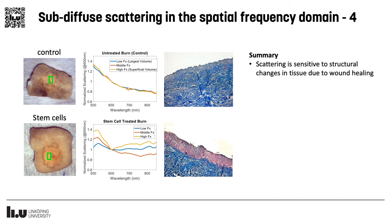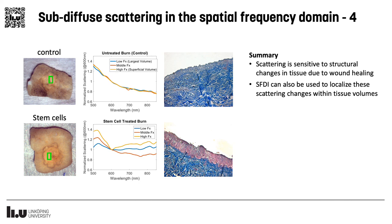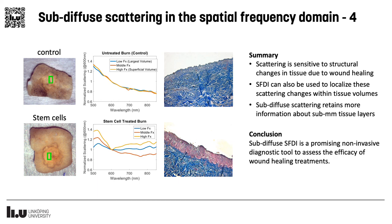To sum up, scattering is a great and little-explored source of contrast for structural changes in tissue due to wound healing. We can measure scattering using SFDI, and this measurement can also be depth sensitive by using different spatial frequencies. We also investigate methods to detect sub-diffuse scattered photons, because they can provide additional information about microscopical structures in tissue. In conclusion, sub-diffuse SFDI is a promising non-invasive technique and could be easily employed in clinic as a diagnostic tool for wound healing applications.